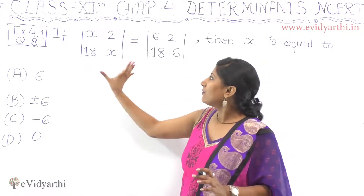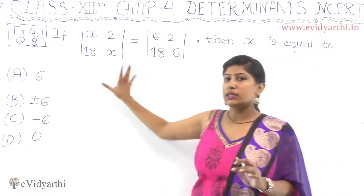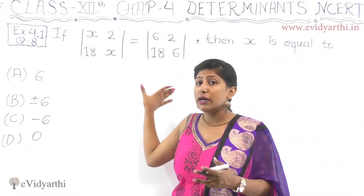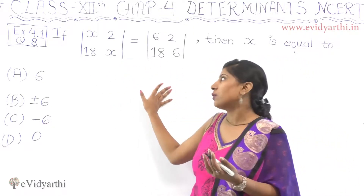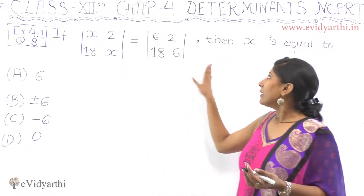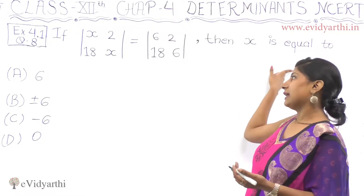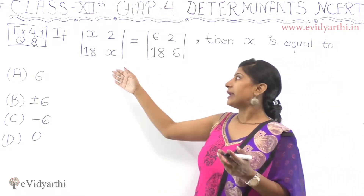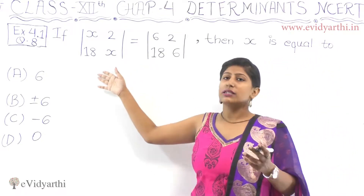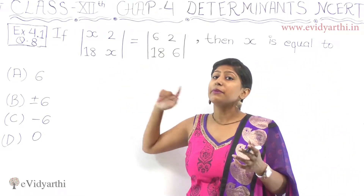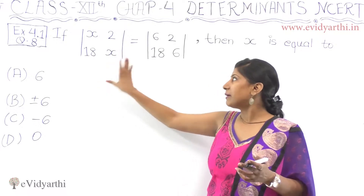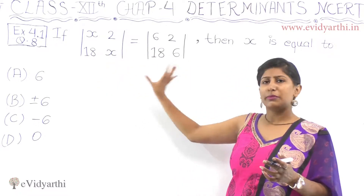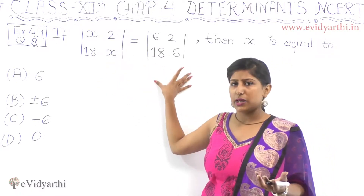If this determinant is equal to this determinant — these are two determinants and they are equal. So, what do we find here? We find x. What are determinants? They mean values — this is a value and this is a value.